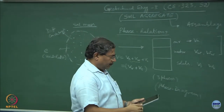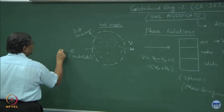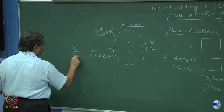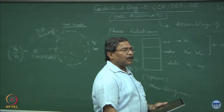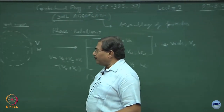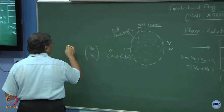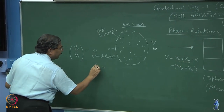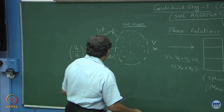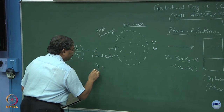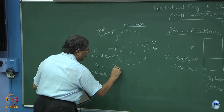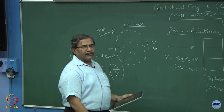Now comes the first attribute of the soil mass: its void ratio. Most Indian authors write it as 'void ratio' but I prefer 'voids ratio' because there is no one void — there are several voids present in the system. E is defined as volume of voids divided by volume of solids. Porosity is the derivative of the void ratio, normally defined as eta, and it is defined as volume of voids divided by total volume.